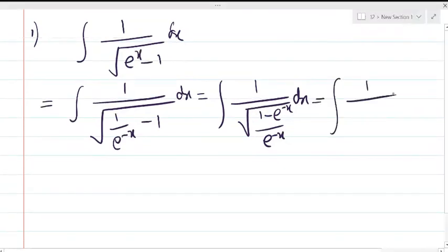1 upon 1 minus e to the power minus x can be written as e to the power minus x by 2 whole square.